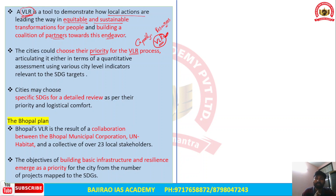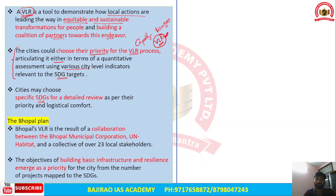Cities have been given the flexibility to choose priority areas and come up with a VLR on those areas, which can be articulated either through quantitative assessment using city-level indicators or relevant SDG targets. Cities may also choose specific SDGs for detailed review — for example, one city may focus on zero hunger while another may focus on no poverty, as per their priorities and logistic comfort.